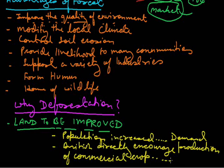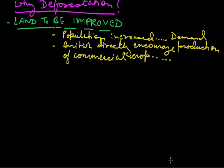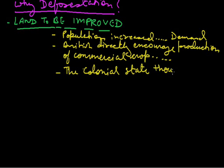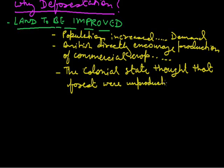The British also directly encouraged the production of commercial crops like jute, sugar, wheat, cotton, etc., which were all raw materials for their industries. The demand for these crops increased during the 19th century in Europe, where food grains were needed to feed the growing urban population and raw materials were needed for the increasing number of industries. The colonial state thought that forests were totally unproductive and were considered wilderness that had to be brought under civilization. They thought there was no use of forests, so the best thing was to cut the forest and use that area for growing raw material.